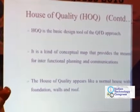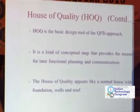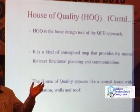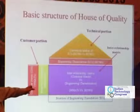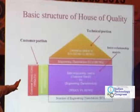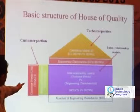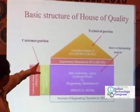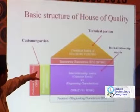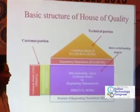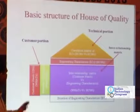The HOQ is the first phase of the QFD approach, where inter-functional planning and communication is possible. It is like a normal house with a base, walls, and a roof. The basic priorities of the engineering characteristics are finally obtained — the customer needs represent the 'what' and their prioritization. The technical portion forms the roof, which is the correlation matrix of engineering characteristics. The inter-relationship matrix is the customer needs versus engineering characteristics, representing 'what' and 'how'.